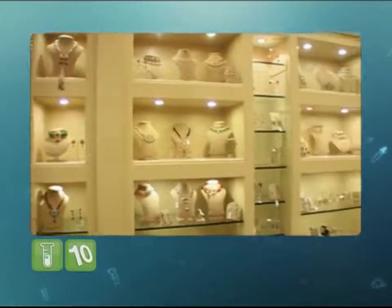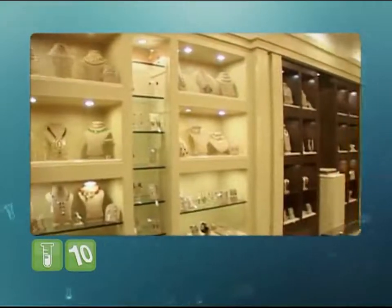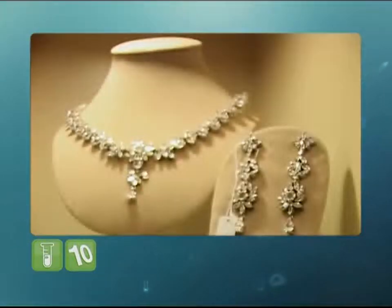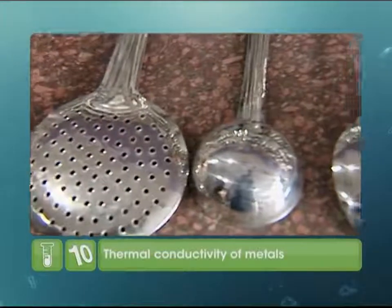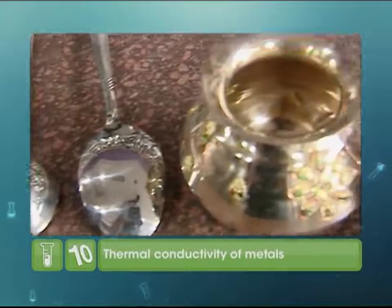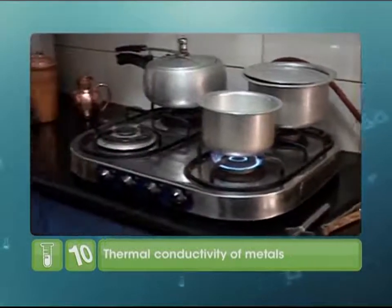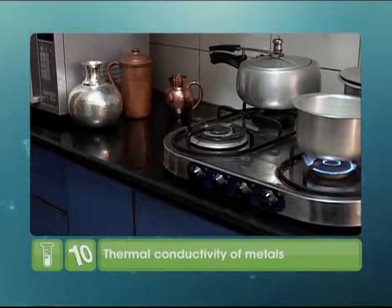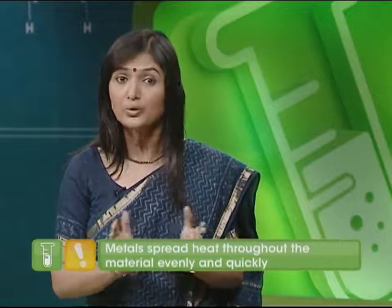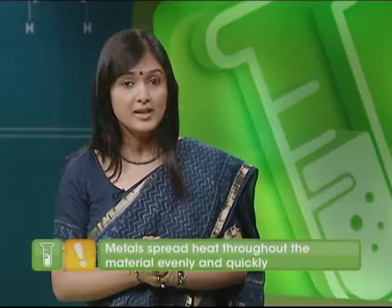Now you know how much effort goes into processing a diamond — a woman's best friend! Let me now talk about another property of metals: thermal conductivity. Visit your kitchen to understand this better. We already know that most utensils are made of iron, zinc, copper and aluminium. Why do we use these metals for preparing food? The answer is that these metals spread heat throughout the material evenly and quickly.